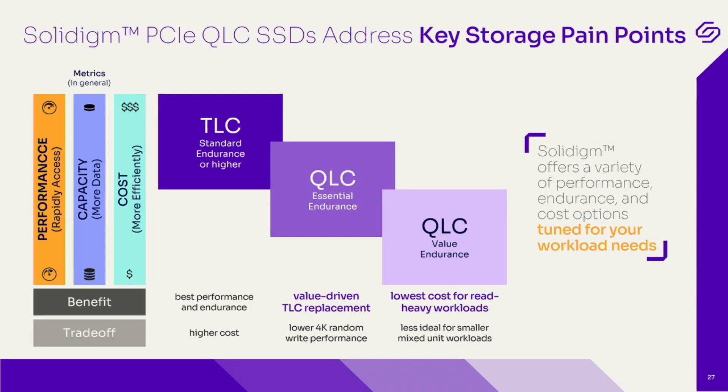For TLC drives, typically for the PCIe Gen4 platform, you are able to get about 200k IOPS random write performance. For QLC, we will reach about half of that — 100k IOPS. That's on the random write performance.